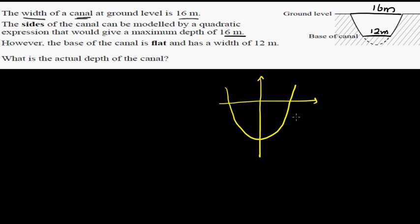So here what they're saying is this width is 16. So this coordinate would be negative 8 comma 0 and this point would be 8 comma 0.